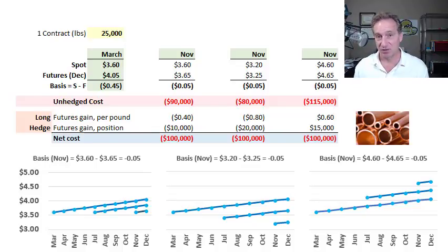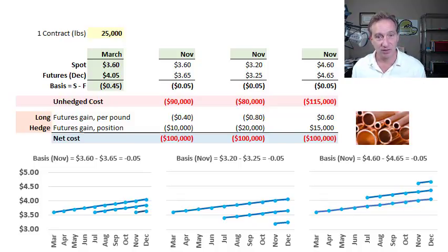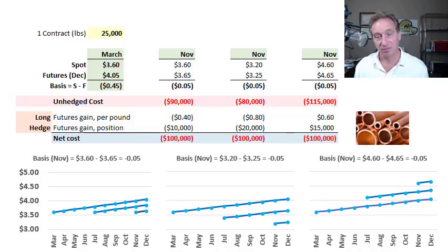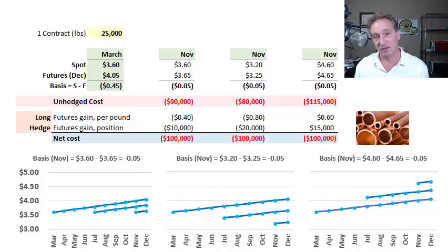A hedge, by definition, is two positions: one, the underlying exposure, and two, the hedge instrument. Therefore, all hedges attach with basis risk. However, the important component of basis risk, or the true source of basis risk, is the unexpected component. It is the unexpected strengthening or unexpected weakening of the basis that constitutes the true basis risk.